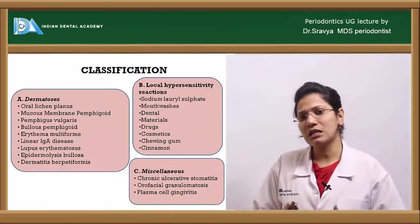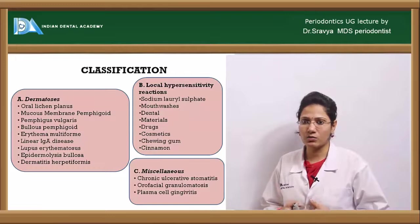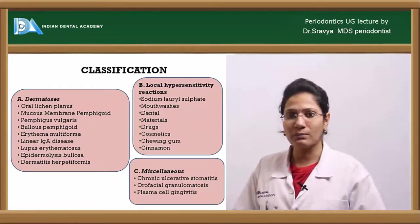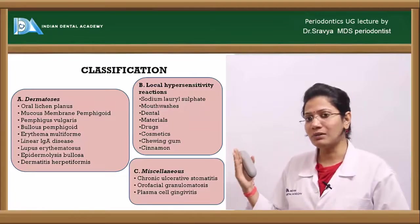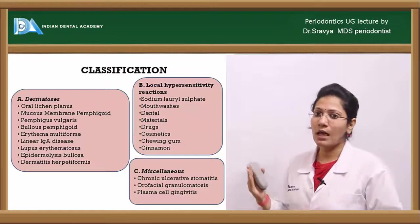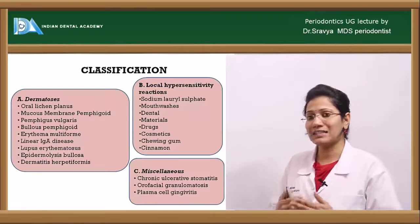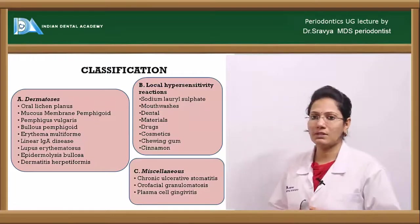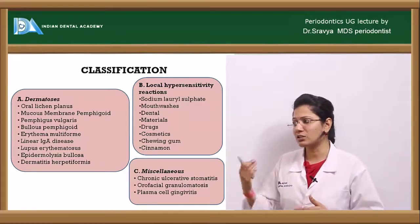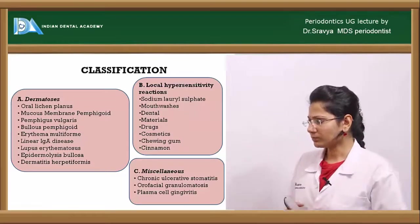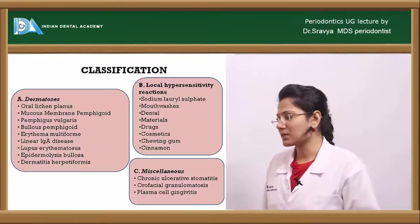The classification is based on the underlying pathological conditions. Dermatological disorders include oral lichen planus, mucous membrane pemphigoid, pemphigus vulgaris, bullous pemphigoid, erythema multiforme, linear IgA disease, lupus erythematosus, epidermolysis bullosa, and dermatitis herpetiformis. Local hypersensitivity reactions include sodium lauryl sulfate, mouthwashes, dental materials, drugs, cosmetics, chewing gums, and cinnamon. Miscellaneous causes include chronic ulcerative stomatitis, orofacial granulomatosis, and plasma cell gingivitis.